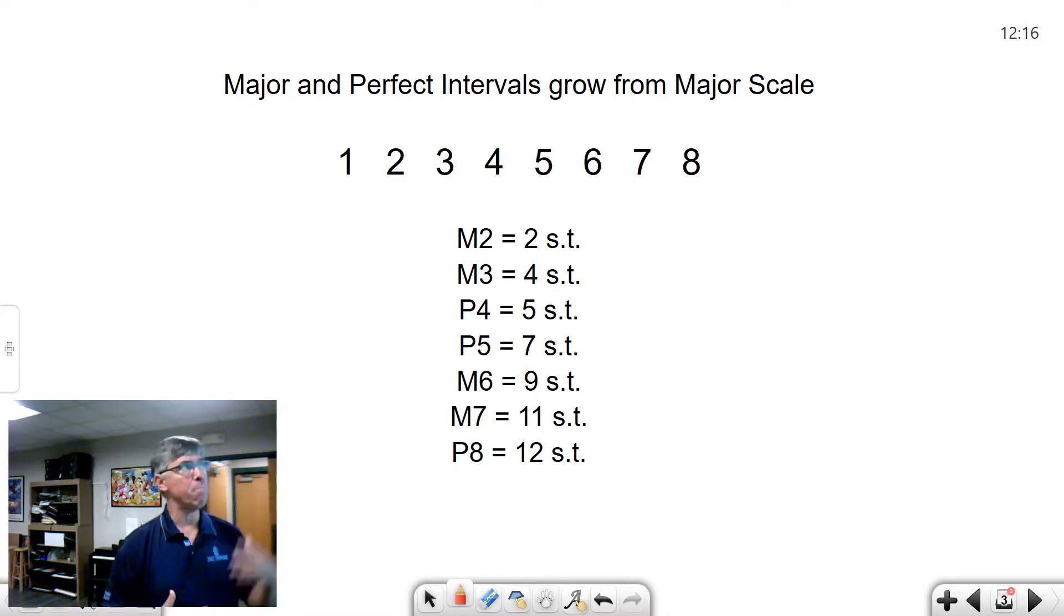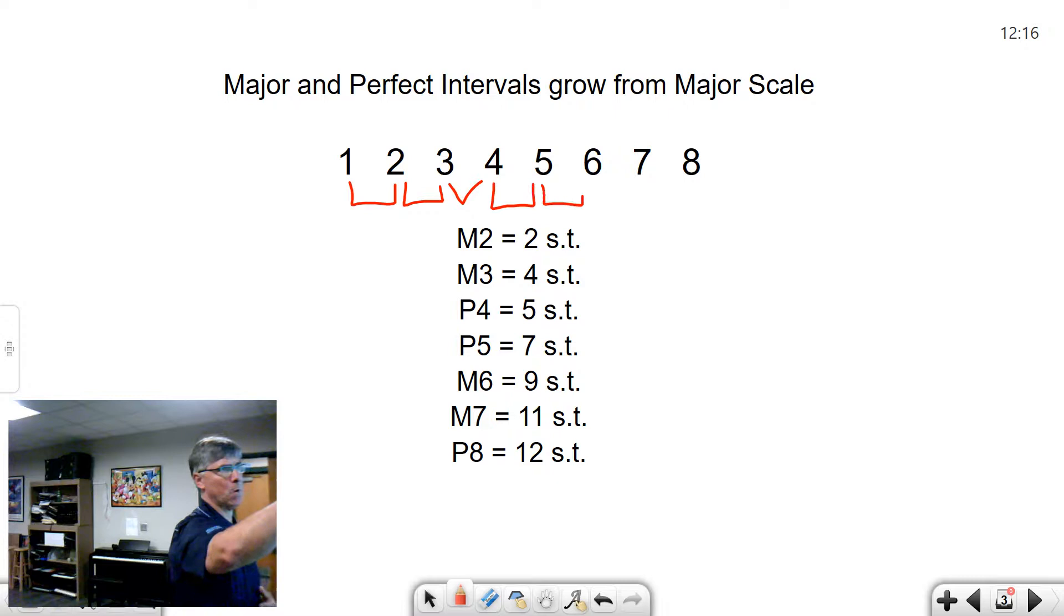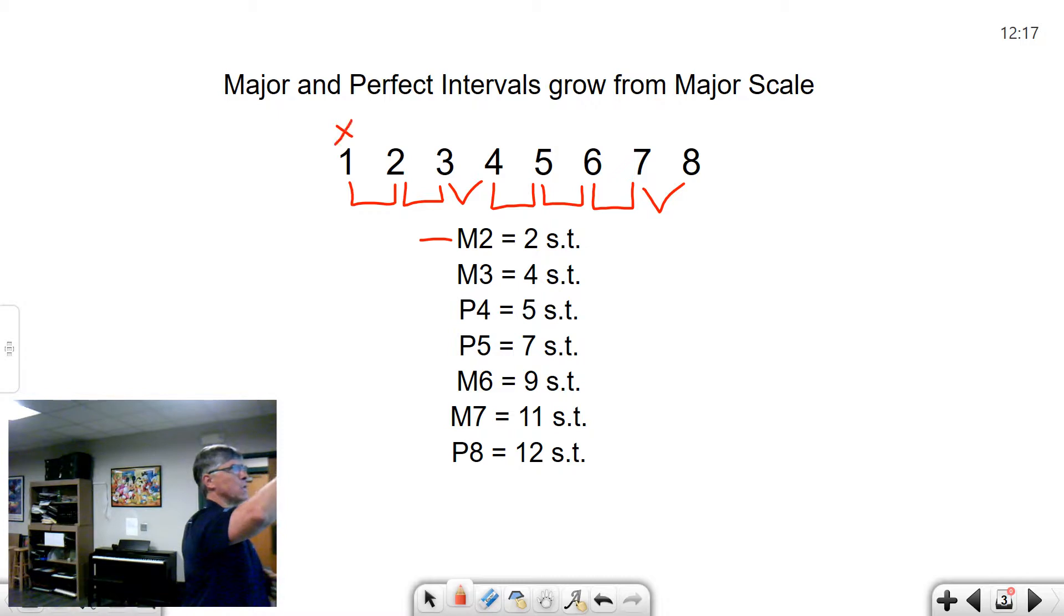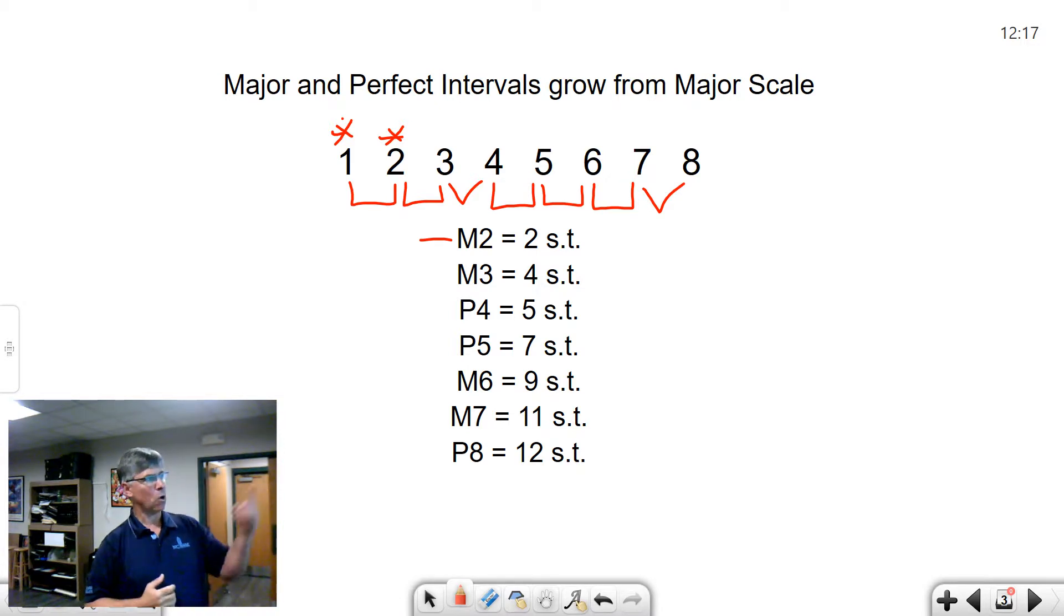Number two, you need to remember that all of the major and perfect intervals grow from the major scale. If you know this, you don't have to memorize stuff. Let's review the major scale. A major scale is whole step, whole step, half step, whole step, whole step, whole step, half step. The major second is determined by the distance from the first step to the second step of the major scale. That's a whole step or two semitones.